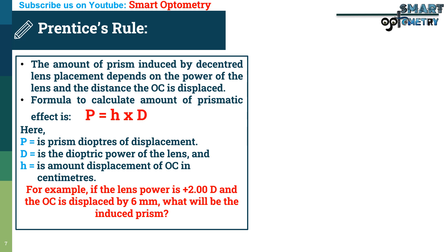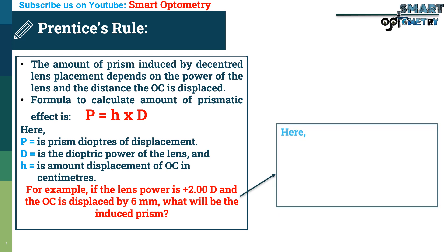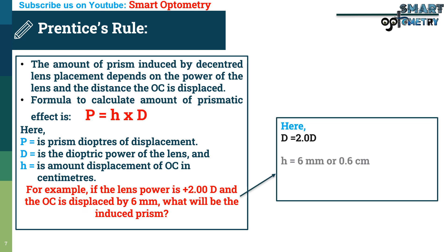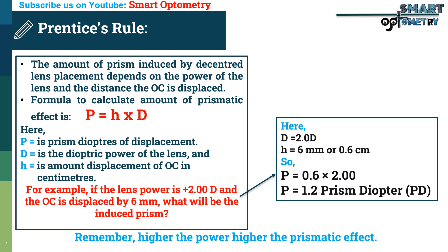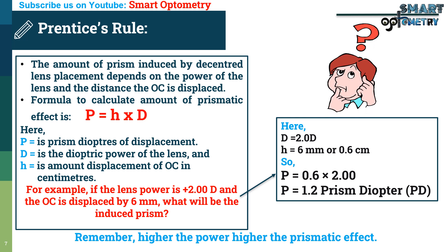For example, if the lens power is plus 2 diopters and the optical center is displaced by 6 mm, what will be the induced prism? Here, D equals 2 and H equals 6 mm or 0.6 cm. So the amount of induced prism is 0.6 multiplied by 2, which equals 1.2 prism diopters. Remember, higher the power, higher the prismatic effect.